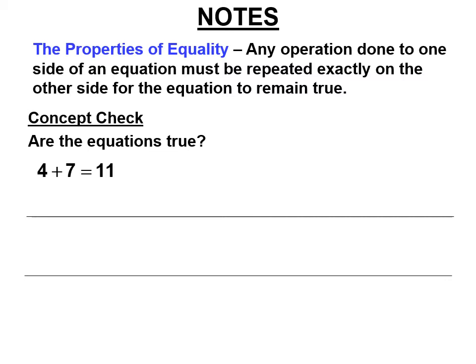So now we're going to learn something called the properties of equality. This will be written there four times. There's an addition property of equality and a subtraction property of equality. And we're going to go over those today. And then the next lesson, the multiplying and dividing properties of equality. The properties of equality say that any operation—add, subtract, multiply, divide—done to one side of an equation must be repeated exactly on the other side. So is 4 plus 7 equal 11? Is that true? Yes, it's true.